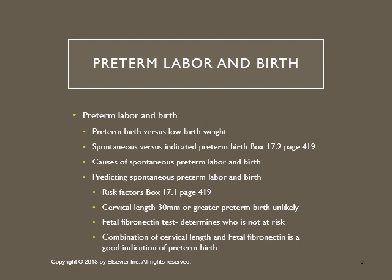Preterm labor and birth: preterm birth is defined as a length of gestation less than 37 and 0/7 weeks, regardless of the weight of the infant. Low birth weight refers to the weight at the time of birth, and it's usually considered low if it's 2,500 grams or less, which is less than 5.5 pounds.